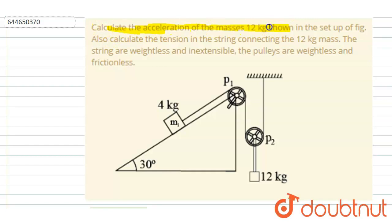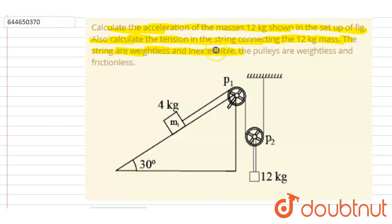Hello everyone. Calculate the acceleration of the 12 kg mass shown in the setup of the figure. Also calculate the tension in the string connecting the 12 kg mass. The strings are weightless and inextensible, and the pulleys are weightless and frictionless.